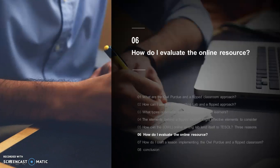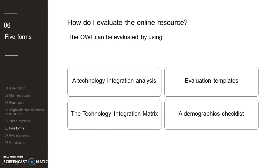Question number six: how do I evaluate the online resource? Educators can evaluate resources online before implementation by developing a technology integration analysis and evaluation to generate conceptual models, templates, and rubrics that evaluate the technology or online resource's content, reflection, usability, resources, and formatting. A template can guide teachers on the rationale for developing and applying OWL. The technology integration matrix is also useful, as is creating a checklist of demographic, educational, motivational, and aspirational variables.